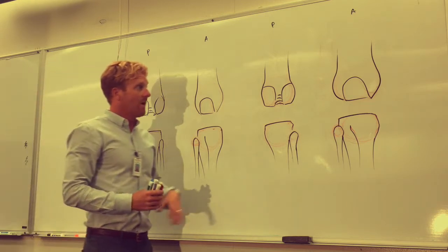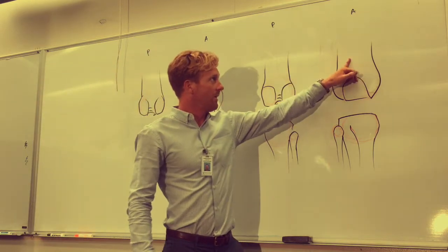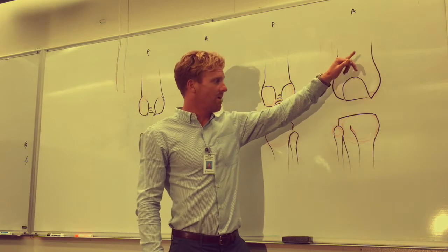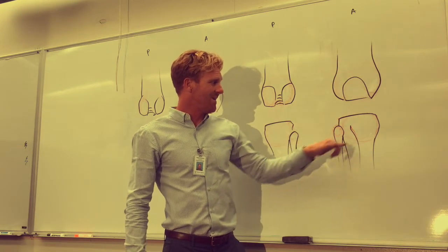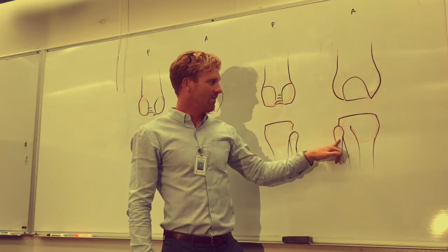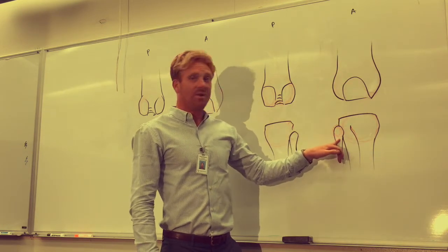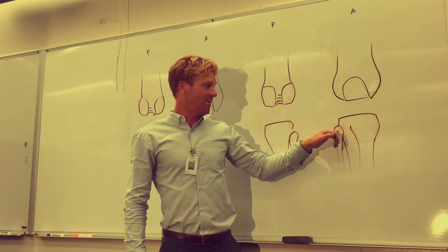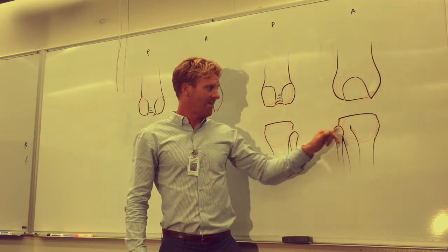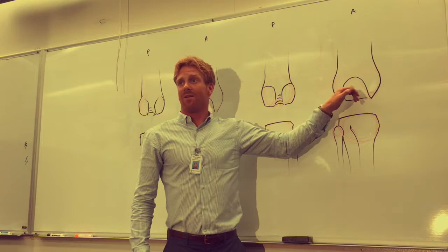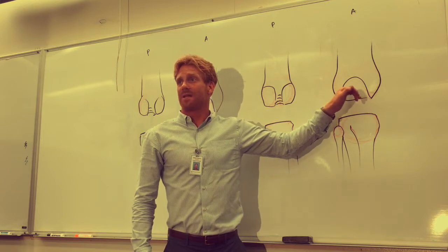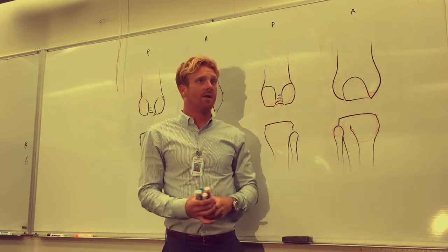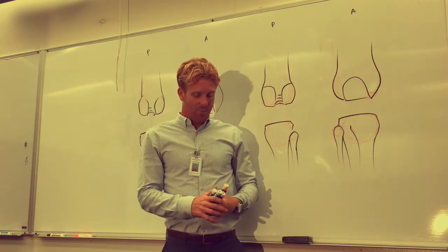In the anterior view of the right knee, you have your femur, your tibia, and your fibula. You know this is the right knee because the fibula is always on the lateral side of the leg. You also have the patellar surface here, which confirms we're looking at the anterior side of the femur.